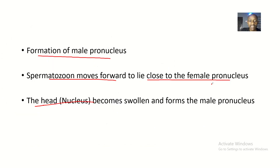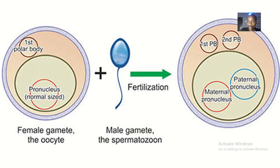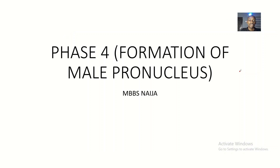That's how the male pronucleus is formed — the spermatozoon comes to lie close to the female pronucleus and hence forms the male pronucleus. Now this pronucleus later fuses, but that's what we'll be talking about in phase 5 of fertilization. That's it about phase 4.